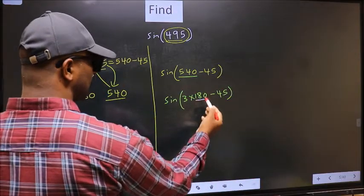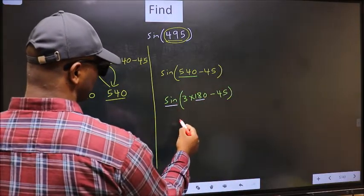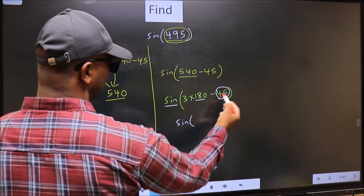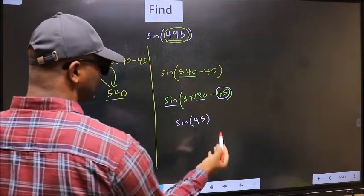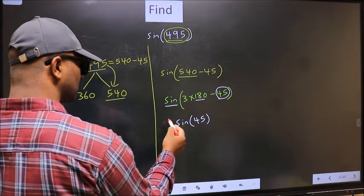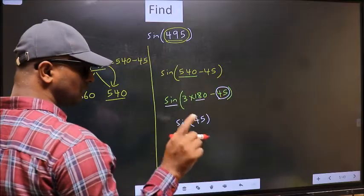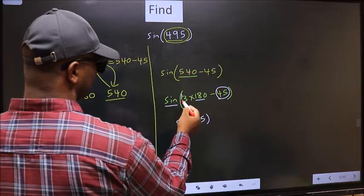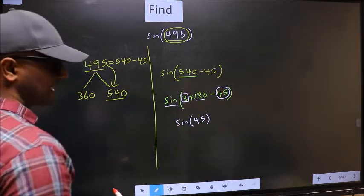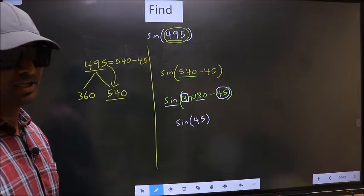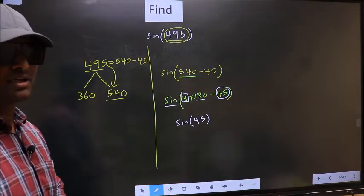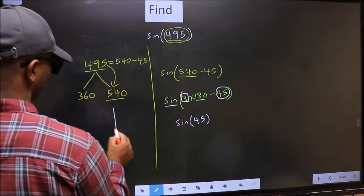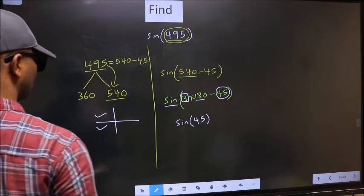Next, here we have 180. So sin is not going to change. It will remain sin. And inside, we get this angle 45. Now, the question is: will we get here plus or minus? To answer that, we should look at the number before 180. That is 3. And 3 is odd. And all the odd multiples of 180, they lie either in the second or in the third quadrant.